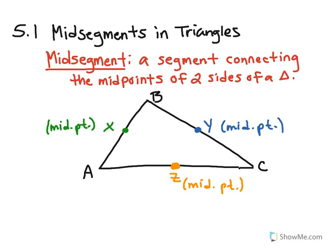So when I connect X and Y, like this, that is a midsegment, because it connects the midpoints of two sides of a triangle. I could also have another midsegment from Z to Y, right here. And I could have a third one from here to here.